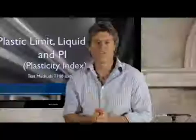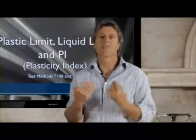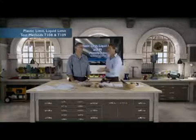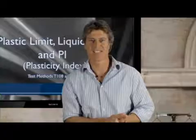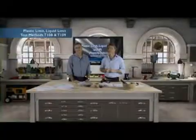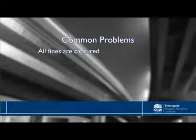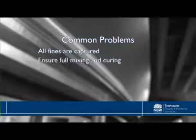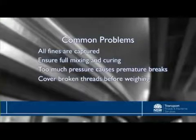As we said at the start, we use the plastic limit test and the liquid limit test to work out a third parameter — the plasticity index. The plasticity index equals the liquid limit minus the plastic limit. As with the liquid limit test, because we're looking at the minus 425 micron portion, any fines adhering to the coarse material need to be brushed off during preparation. At all stages, pay special attention to mixing and curing, keep correct pressure to stop premature breaks, cover broken threads prior to weighing, and ensure the sample does not dry out.